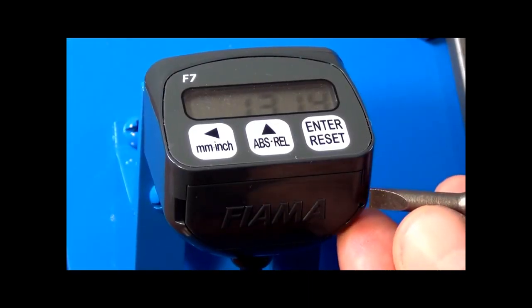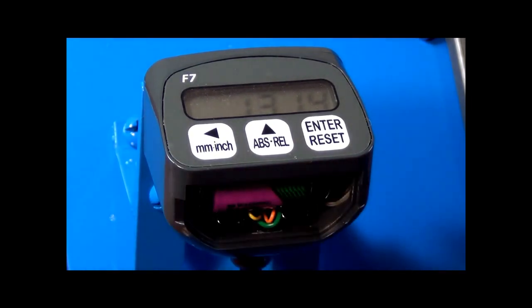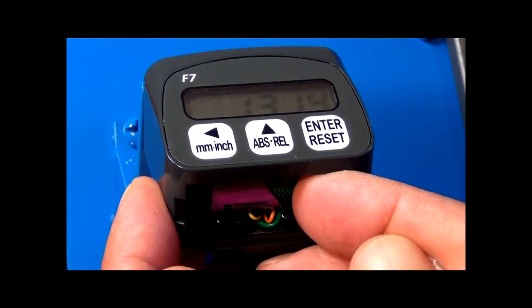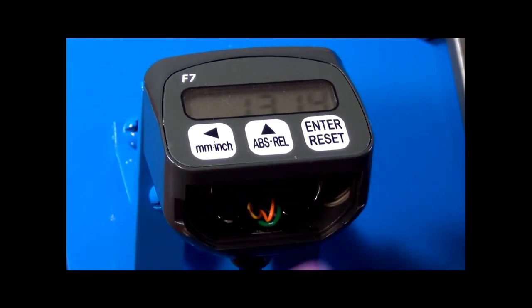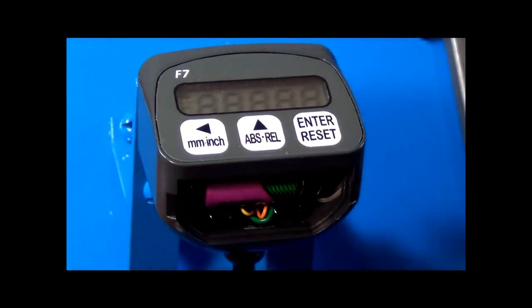The F7 is a battery powered position display with a battery life averaging 4 years. The battery icon on the display offers ample warning before the battery is exhausted and needs replacing. Since the system is battery powered, it acts as a quasi-absolute display where there is no requirement to home or zero the system upon a machine power up.